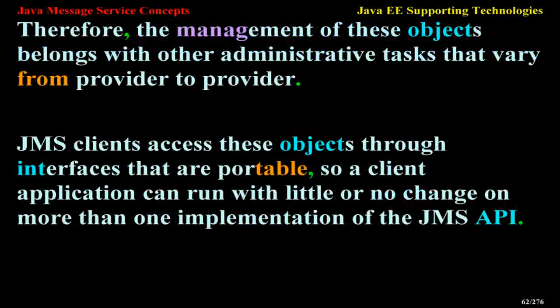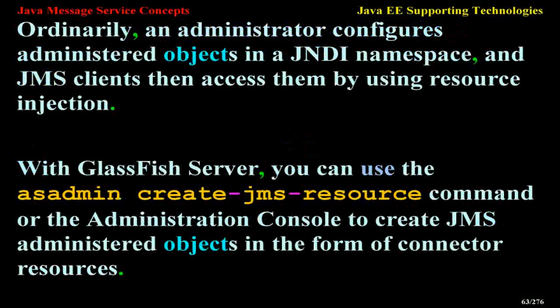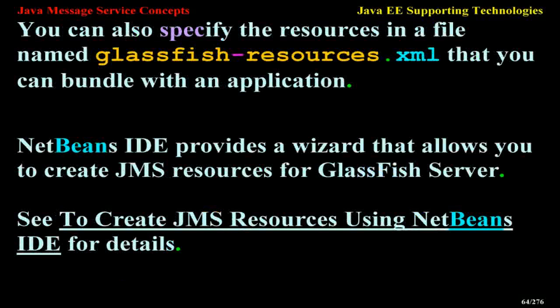JMS Administered Objects. Two parts of a JMS application — destinations and connection factories — are best maintained administratively rather than programmatically. The technology underlying these objects is likely to be very different from one implementation of the JMS API to another. JMS clients access these objects through interfaces that are portable, so a client application can run with little or no change on more than one implementation of the JMS API. An administrator configures administered objects in a JNDI namespace, and JMS clients access them using resource injection. With GlassFish server, you can use the asadmin create-jms-resource command or the Administration Console to create JMS administered objects.